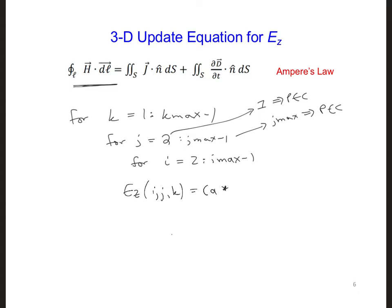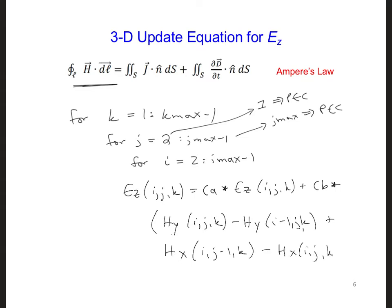And that's equal to CA times the EZ component at the previous time step, plus CB times HY(i,j,k) - HY(i-1,j,k) + HX(i,j-1,k) - HX(i,j,k). And then we can write ends for each of these. This is how we would update the EZ components in the grid.